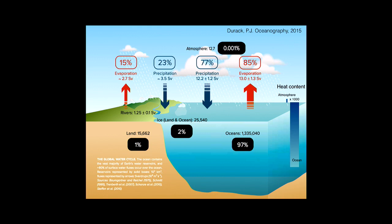Whether the oceans can continue to do that in the future is something we are still asking. If you think about heat — where is all the heat? — 90% of the heat is in the oceans. In many ways, the oceans define the climate. The circulation of the oceans defines the climate. And about half the primary production on the Earth takes place in the oceans.